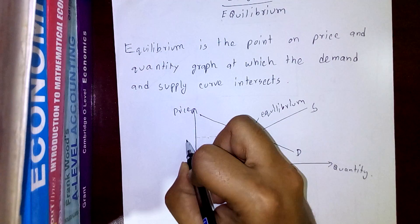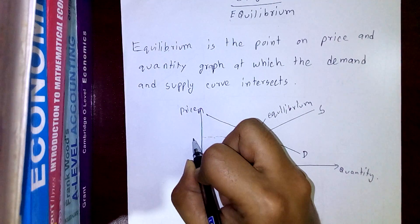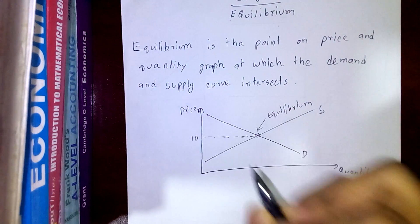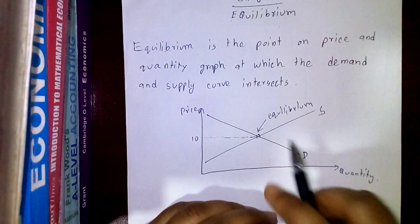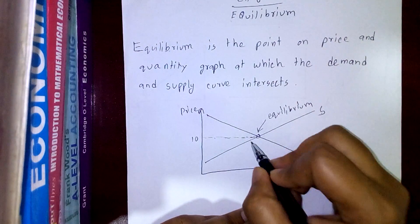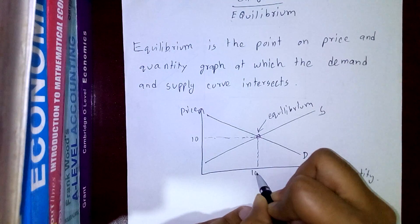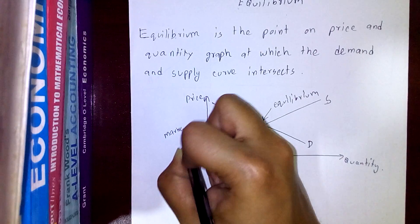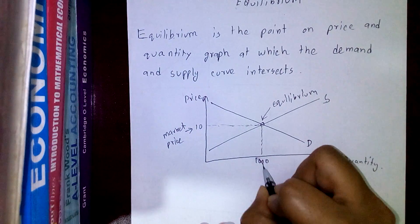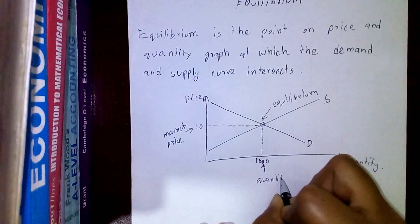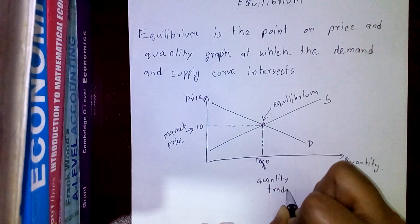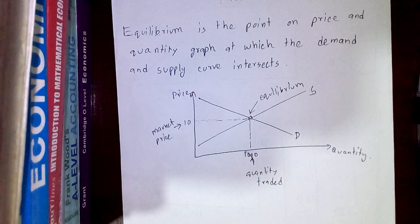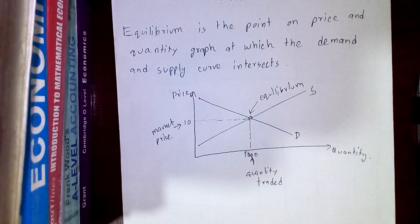For example, we normally draw a demand and a supply curve in a price and quantity diagram. If a supply curve is upward sloping — denoted by S — and a demand curve is denoted by D, the point of intersection of the demand curve and the supply curve is called the equilibrium. The price at which this point is found is called the market price.